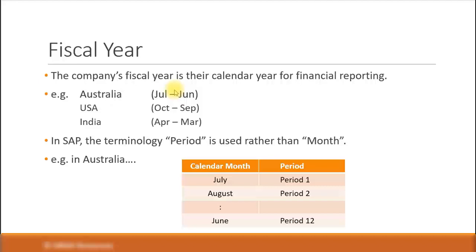Let's look at a fiscal year. The company's fiscal year is their calendar year for financial reporting. For example, if it's an Australian company, it will follow Australia's fiscal year which starts from 1st of July to 30th of June every year. Similarly, for a US-based company, it will follow the USA's fiscal year which starts from 1st of October to 30th of September. In the SAP environment, the terminology 'period' is most commonly used rather than 'month,' so your calendar month is converted to a period.